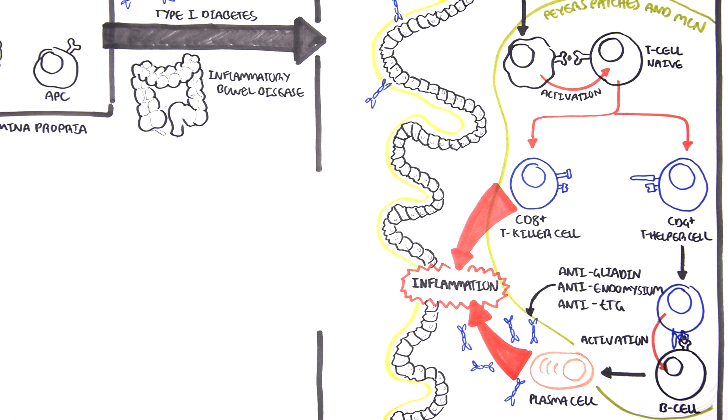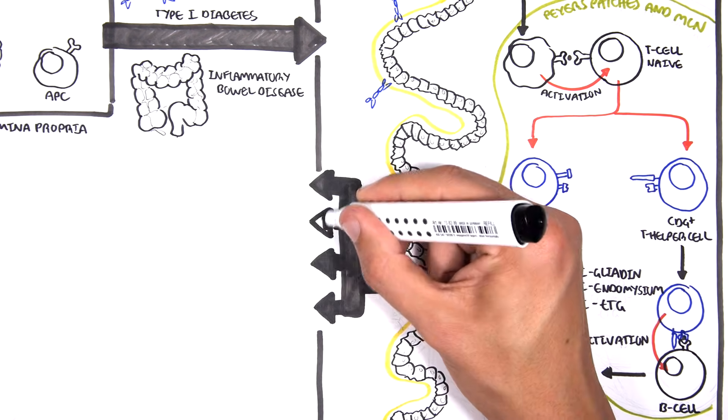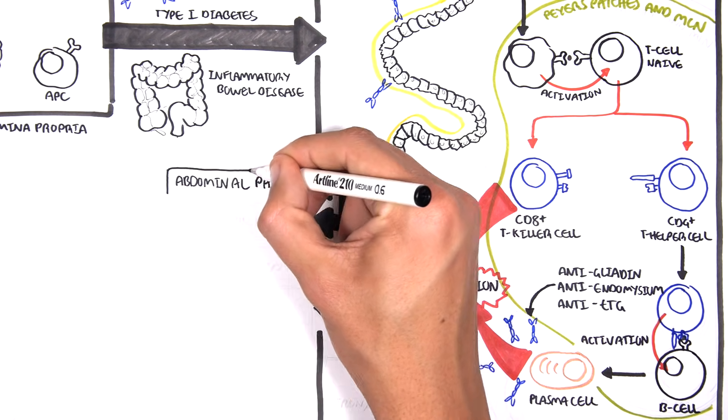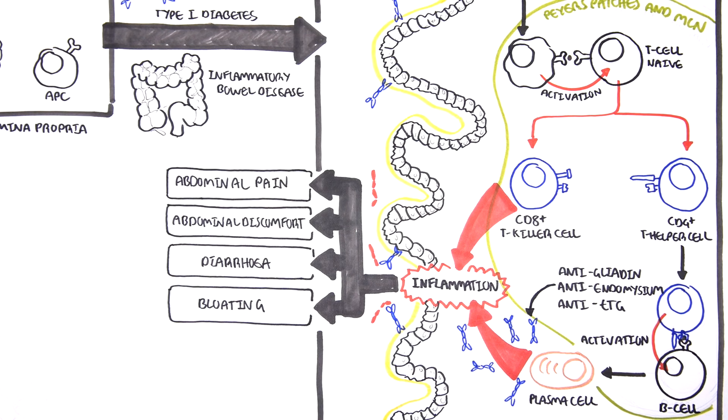And so, every time we eat foods containing gliadin, inflammation will occur around the area. Inflammation around the small intestine will cause abdominal pain, abdominal discomfort, diarrhea, as well as bloating.